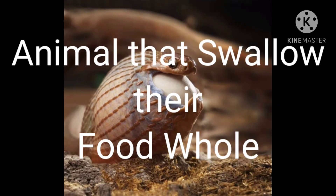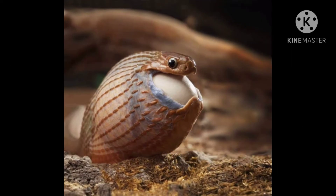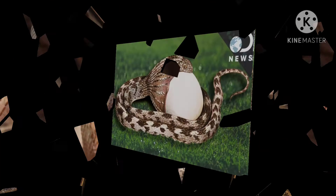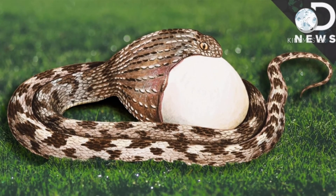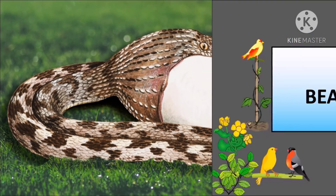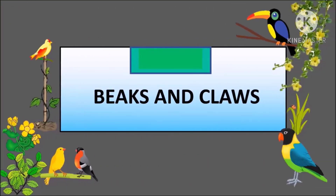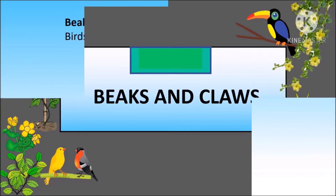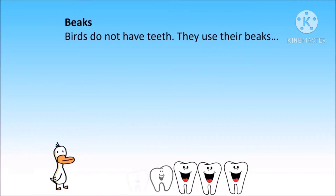Some animals swallow their food completely without chewing. Snakes have needle-like teeth and do not chew their food — they swallow the animal as a whole. Lizards and frogs also swallow their food without chewing it; they just swallow their food whole.